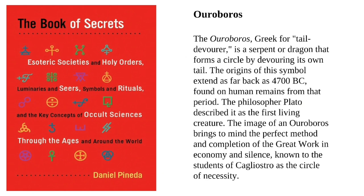Ouroboros. The Ouroboros, Greek for 'tail devourer,' is a serpent or dragon that forms a circle by devouring its own tail. The origins of this symbol extend as far back as 4700 BC, found on human remains from that period. The philosopher Plato described it as the first living creature. The image of an Ouroboros brings to mind the perfect method and completion of the great work in economy and silence. Known to the students of Cagliostro as the circle of necessity.